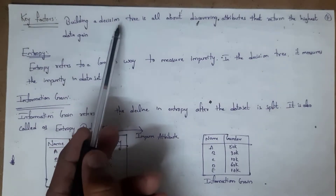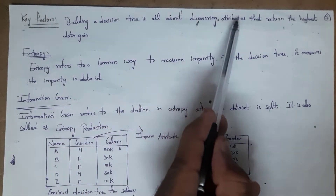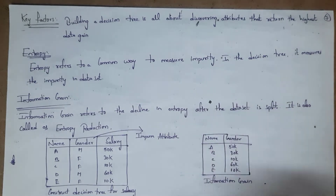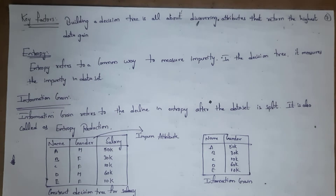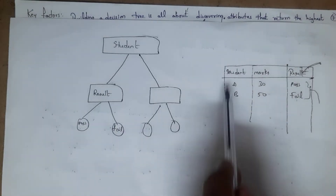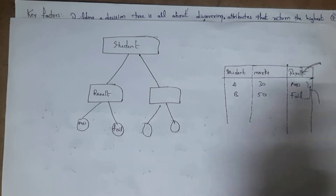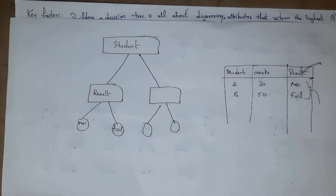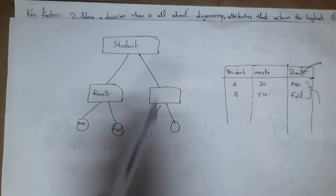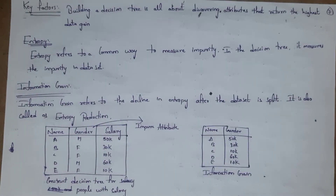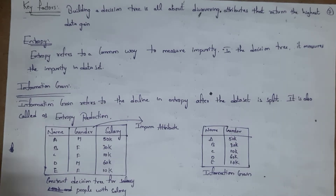Building a decision tree is all about discovering attributes that return the highest data gain — it is nothing but finding attributes that provide the highest information. For example, if you consider this dataset containing three attributes — student, marks, and results — there are two key factors to consider when selecting an attribute that provides more useful information: the first one is entropy and the next one is information gain.